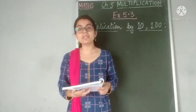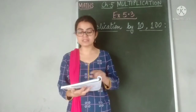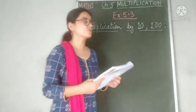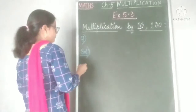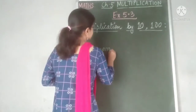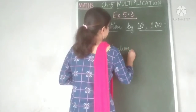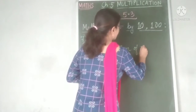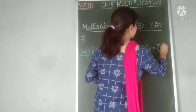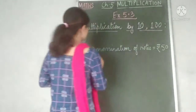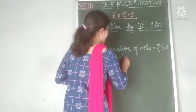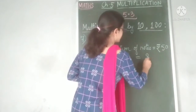So the denomination or the value of notes is 50, and how many notes does he have? 85. So the first statement will be: denomination of notes is rupees 50, and number of notes is 85.